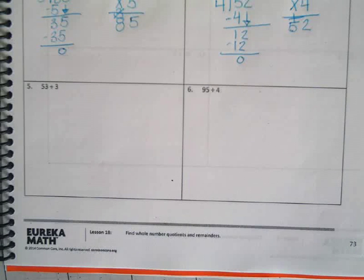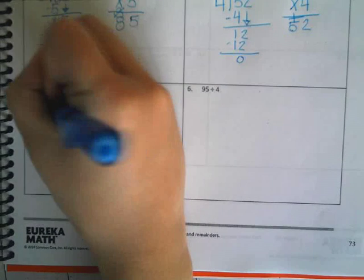So, for number 5, how do I set this up? Who can help me out? Maya, how do I set it up? You do 53 in the box. Alright.